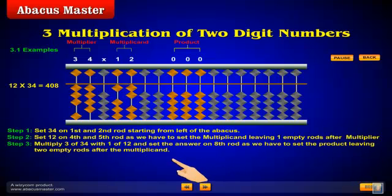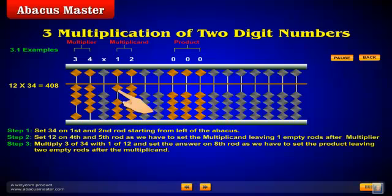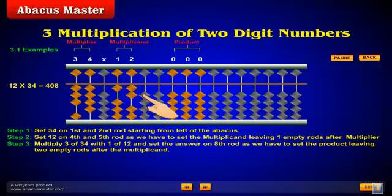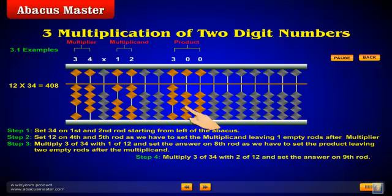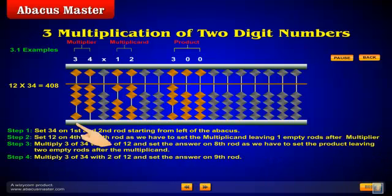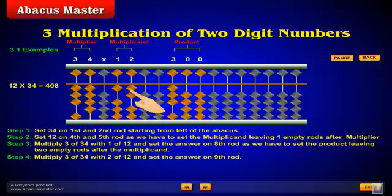Step 3: Multiply 3 of 34 with 1 of 12 and set the answer on the eighth rod, as we have to set the product leaving two empty rods after the multiplicand. Step 4: Multiply 3 of 34 with 2 of 12 and set the answer on the ninth rod.